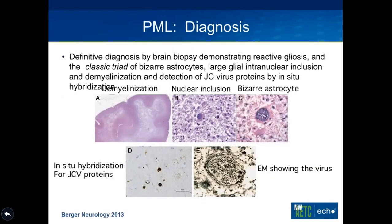The definitive diagnosis requires a biopsy, and there is a classic triad of bizarre astrocytes, nuclear inclusions, and demyelination that is typical of PML. You can also do in situ hybridization to pick up JC virus proteins, and if you have access to an electron microscope, you can actually see the virions replicating within glial cells.